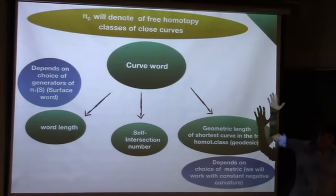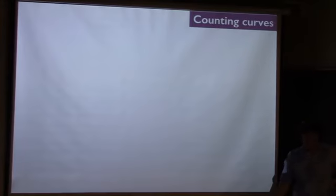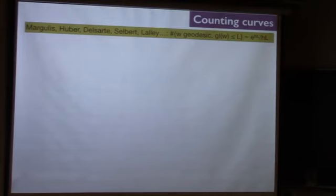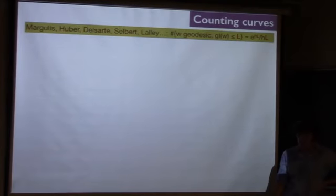Phi-zero is the set of free homotopy classes — I call it phi-zero because it's a set of components of the free loop space. If you want to count how many free homotopy classes you have on a surface with a certain hyperbolic metric up to geometric length L, this grows like e^{hL} divided by hL. Here h is a number between zero and one — it equals one for a closed surface. In general, h is the entropy of the geodesic flow. You can ask me later if you're curious about this h.